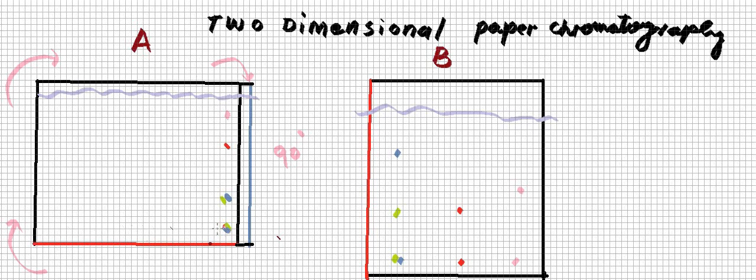This red side is dipped in the mobile phase and the mobile phase has traveled upward this way. The components have not been separated by the solvent system, so now we have another solvent system or another mobile phase with a different polarity.